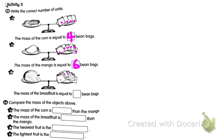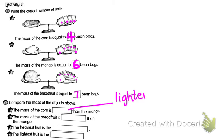Picture C — the mass of the breadfruit is equal to how many bean bags? Let's count: one, two, three, four, five, six, seven — seven bean bags. Question Two: compare the mass of the objects above. Sentence A: the mass of the corn is lighter than the mango.